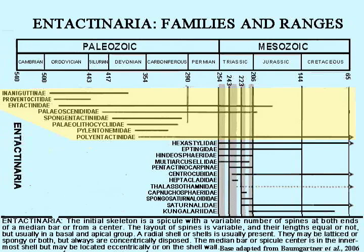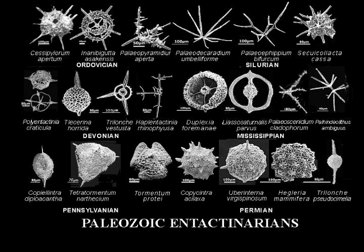Entactineid families and their ranges are posted on the chart. Of the seven families that originated in Paleozoic times, only one — the Polyentactinidae — is extant. Typical Paleozoic Entactinarians are pictured on this slide.